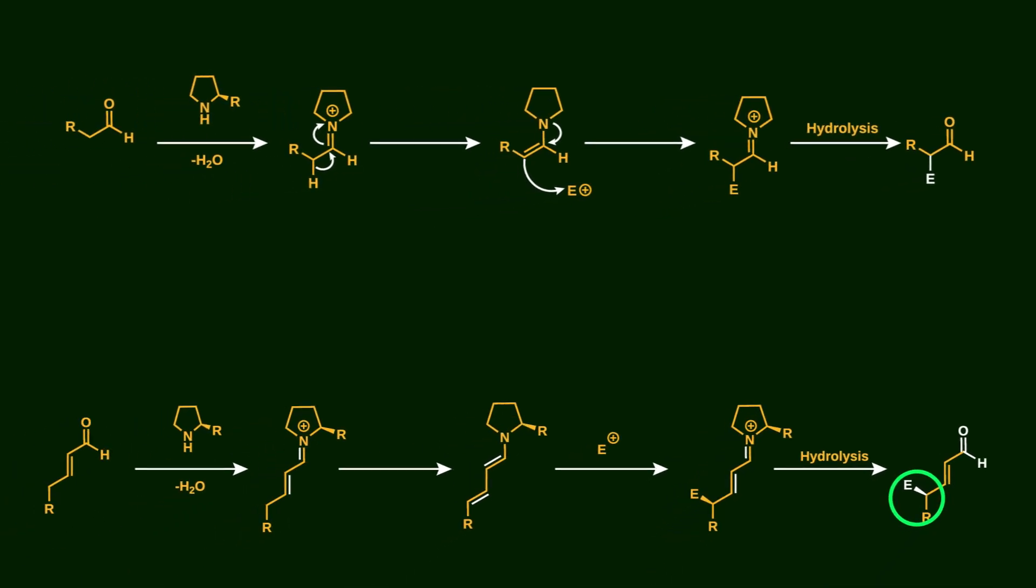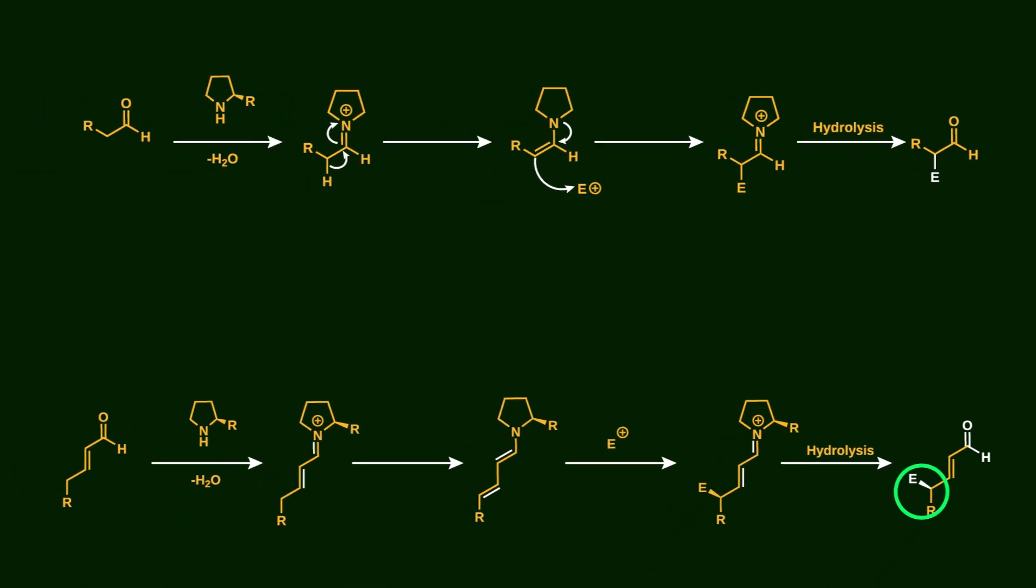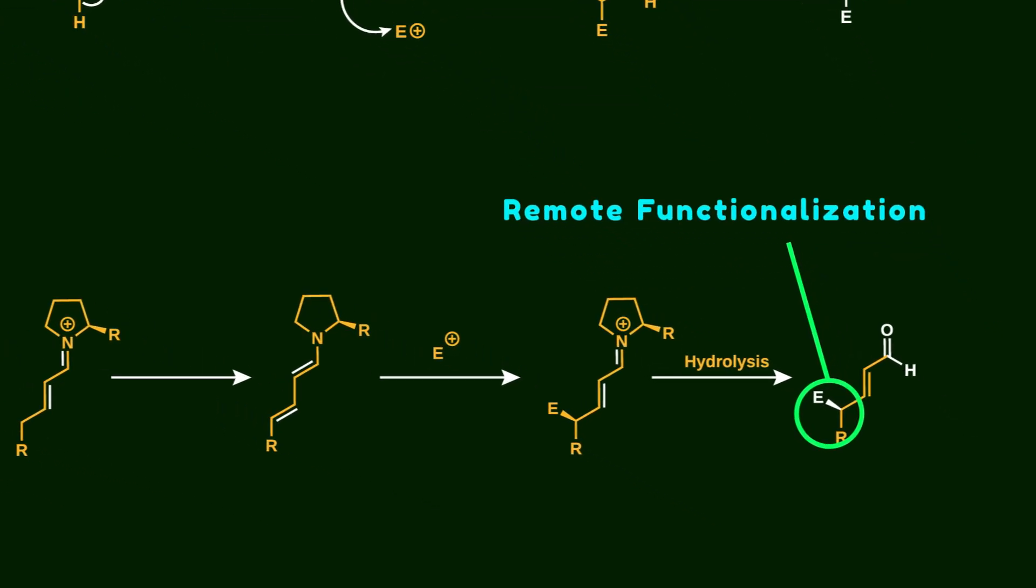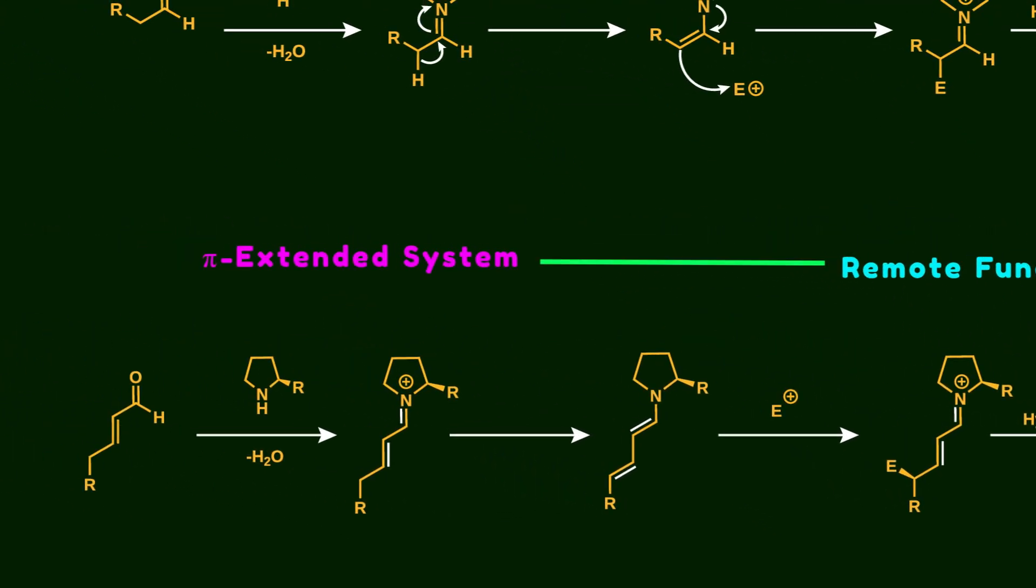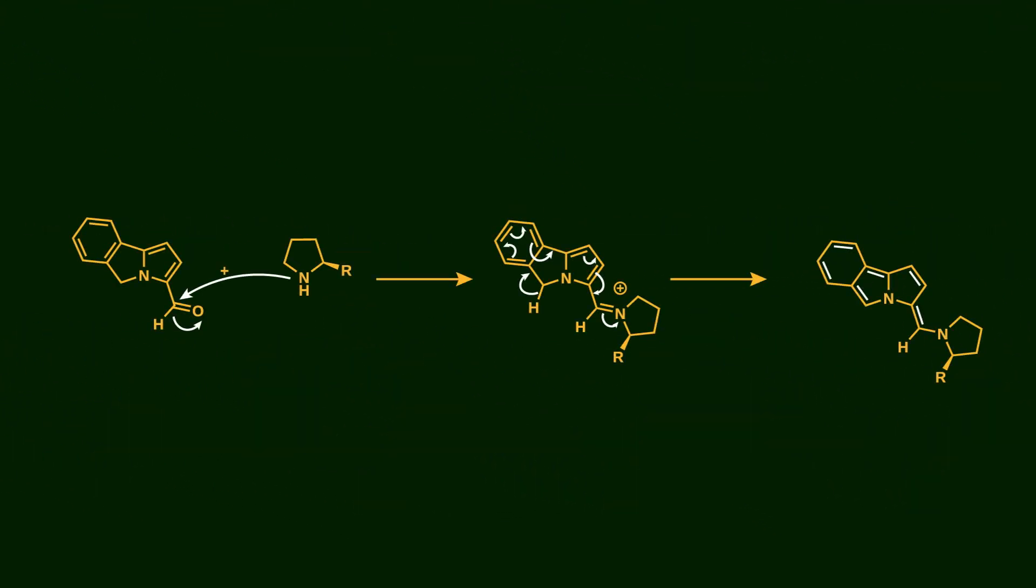The beauty of vinylogous aminocatalysis is that it enables us to extend beyond the alpha position, allowing the reaction to occur at more distant positions relative to the aldehyde group. To achieve such remote functionalization, we need a pi-extended system, just like in our case, where pi orbitals extend throughout the molecule, making through-chain communication possible.